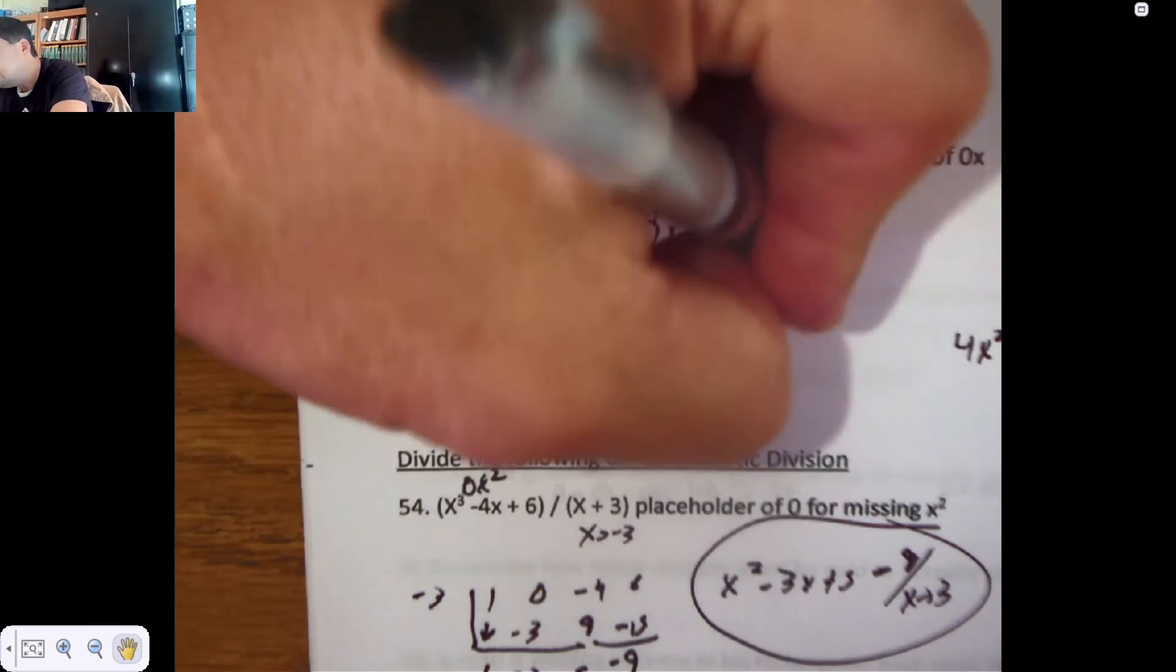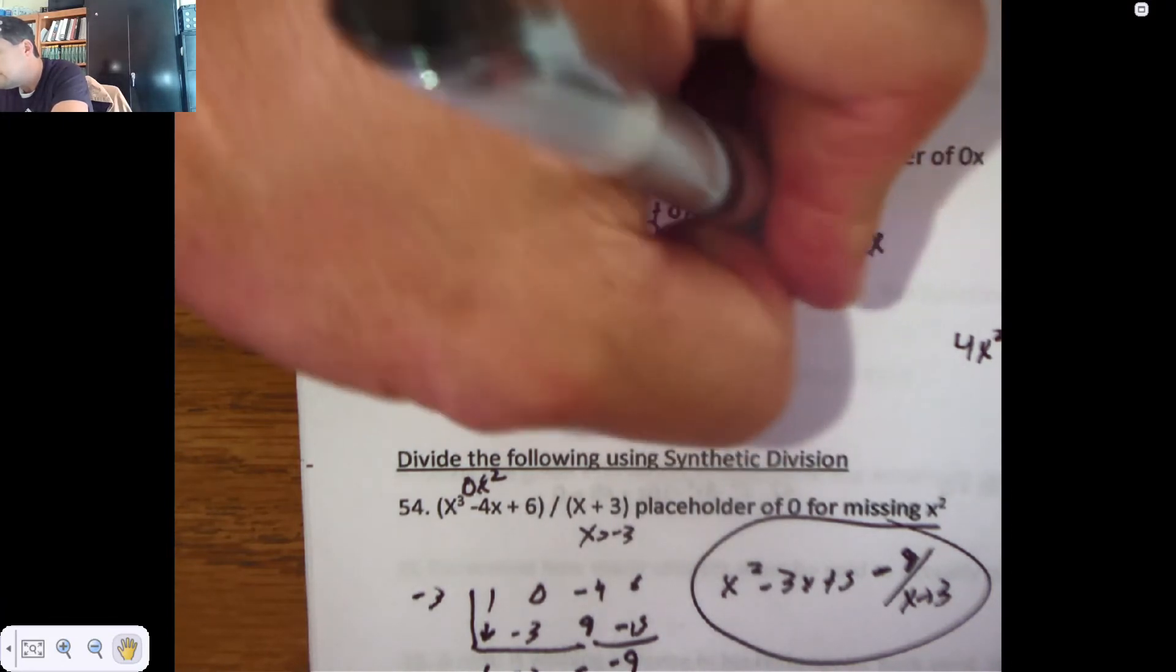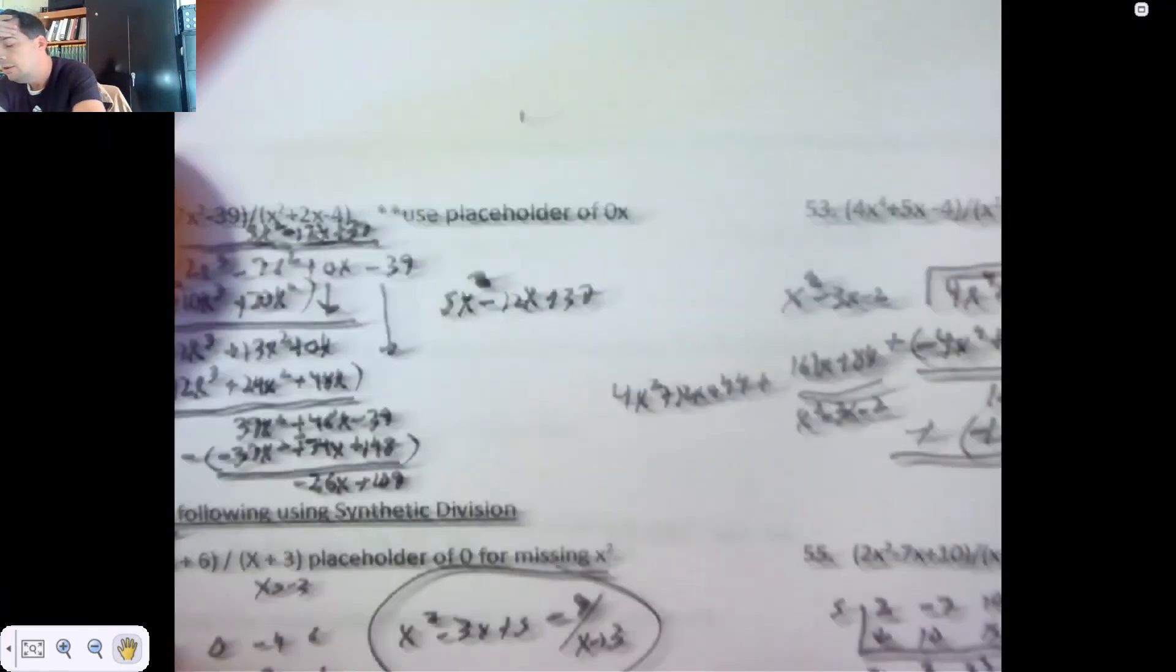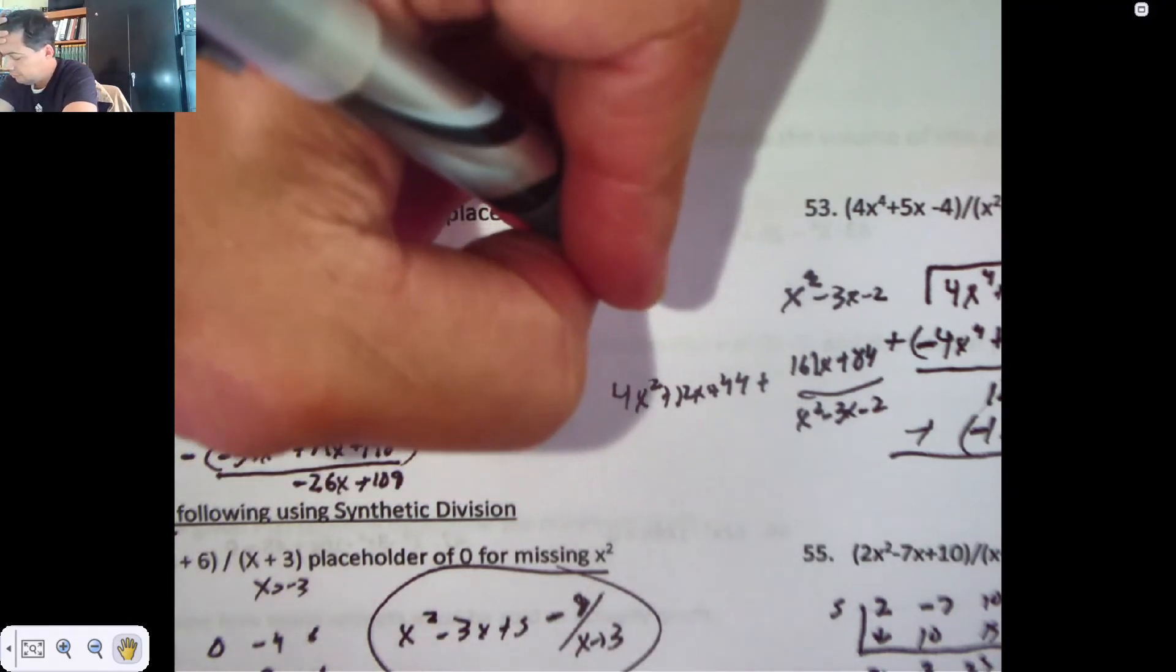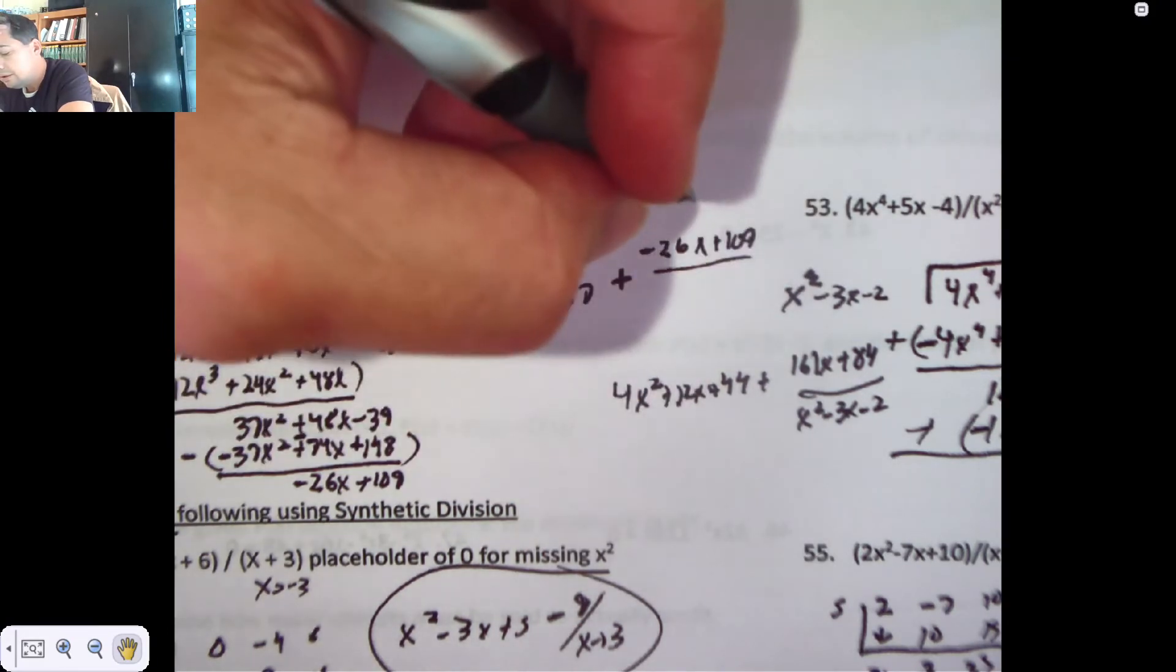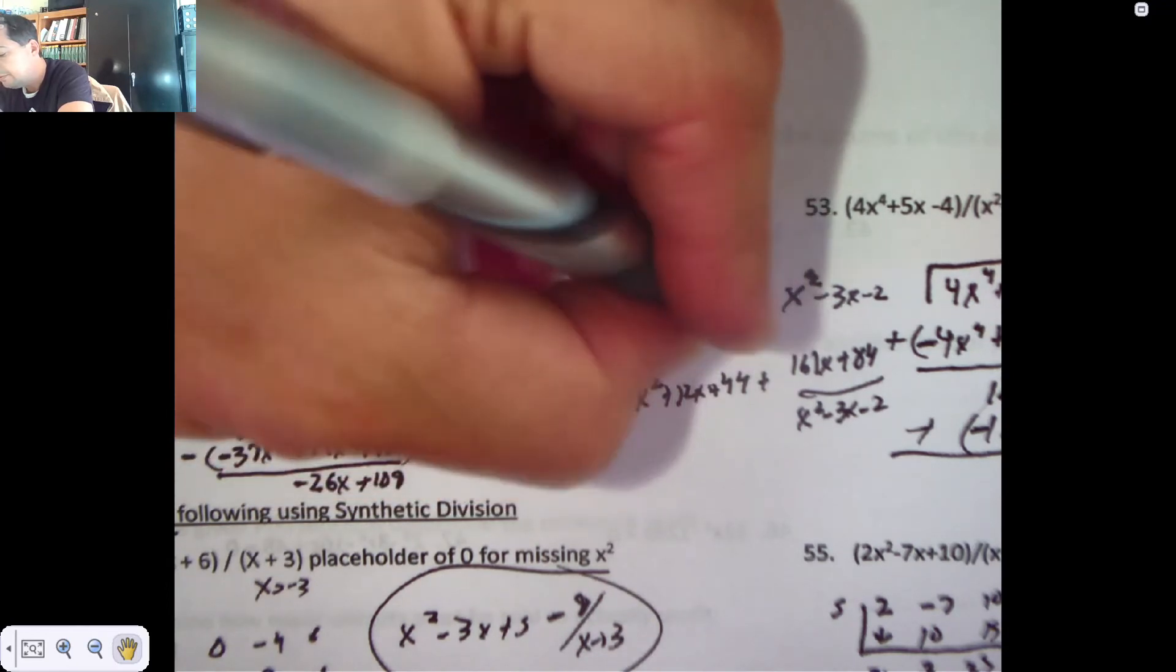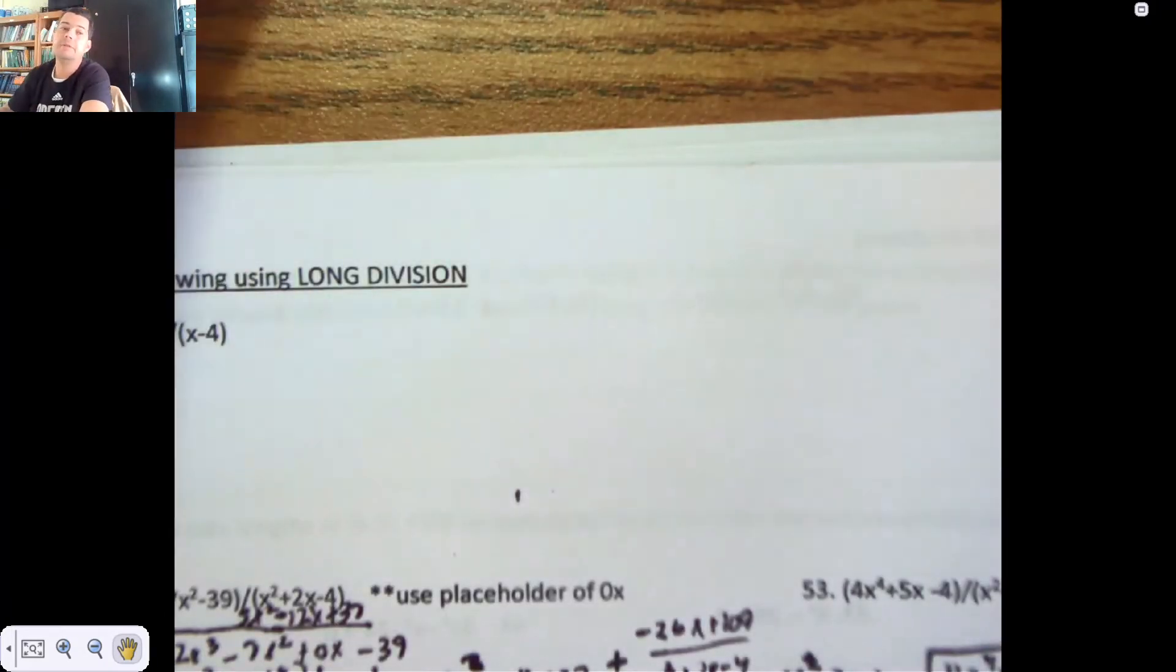So, after all this work, I ended up with 5x squared minus 12x, which I could write this morning. It would be good for you all, too. Plus 37. Actually, it would be safer to write this. Plus a negative 26x plus 109 pieces of x squared plus 2x minus 4. And that's long division, and there's one left. And I'll be done with this video for the day.